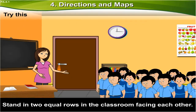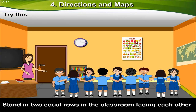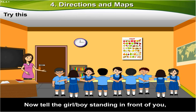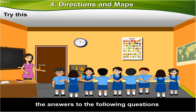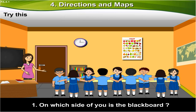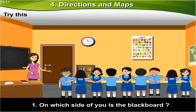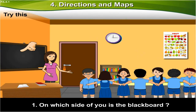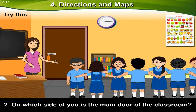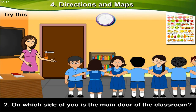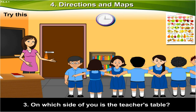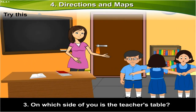Stand in two equal rows in the classroom facing each other. Now tell the girl or boy standing in front of you the answers to the following questions. Number 1: On which side of you is the blackboard? Number 2: On which side of you is the main door of the classroom? Number 3: On which side of you is the teacher's table?